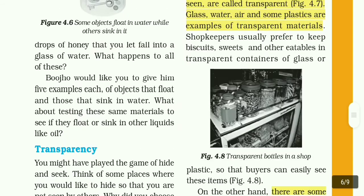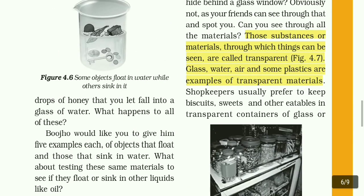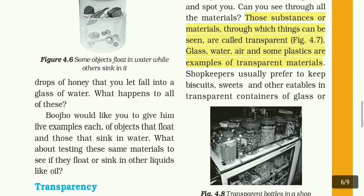The next topic is transparency. Those substances or materials through which things can be seen are called transparent. Glass, water, air, and some plastics are examples of transparent materials. Transparent materials are easy to identify — for example, bags and bottles in mall shops let you see the contents inside. It is transparent.